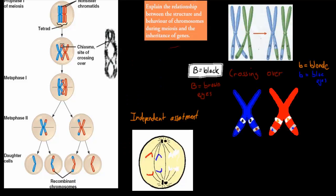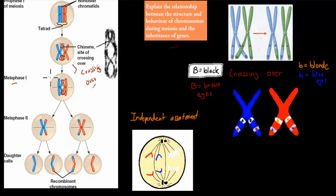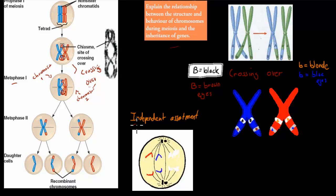Here is the crossing over step, which happens during metaphase 1. During crossing over, some of these chromosomes will swap parts of their actual coding. These chromosomes have lots of different genes on them, and some genes will swap between chromosome 1 and chromosome 2. These are your homologous pairs — they code for the same things but just have different alleles. After the swap, that's the crossing over phase. Then we have segregation, also called independent assortment.